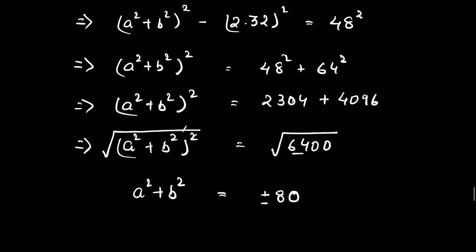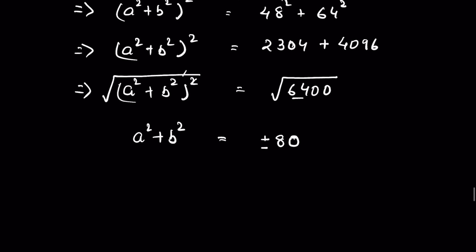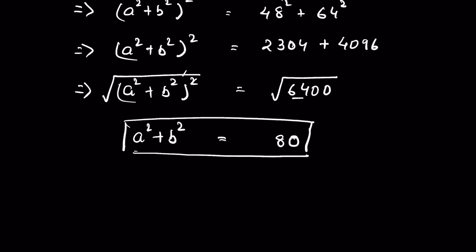Since a and b are positive integers, a²+b² must be positive, so we discard the negative solution. Therefore a²+b² equals 80. Let this be equation 5.